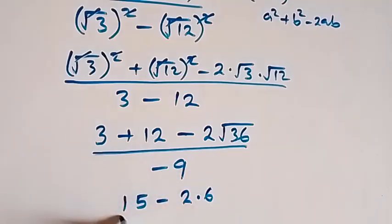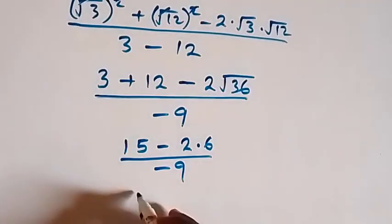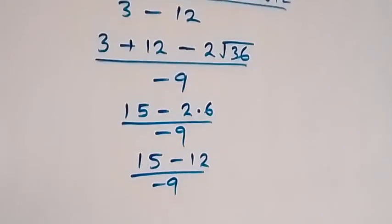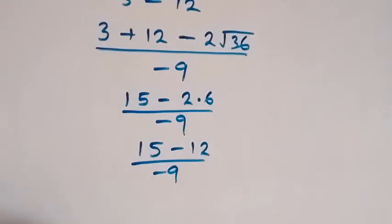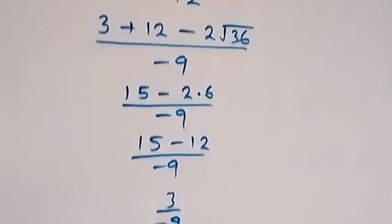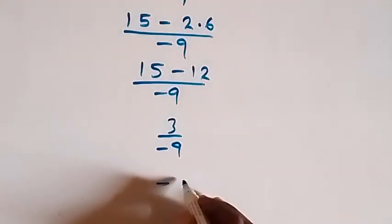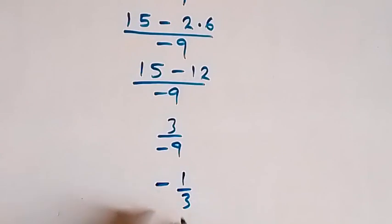15 minus 12, we have 3. So this is 3 over -9, and we can reduce this and this will be -1 over 3. So we have the simplified form here as -1/3.